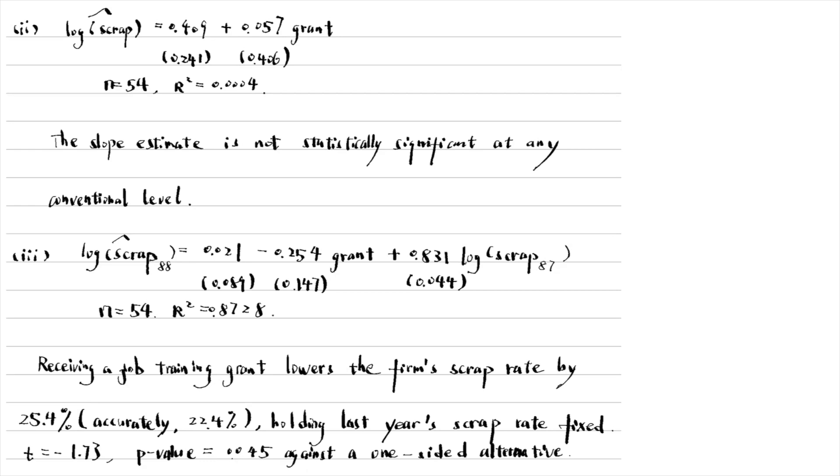Against a one-sided alternative, it is statistically smaller than 0 at the 1% level, against a one-sided alternative.